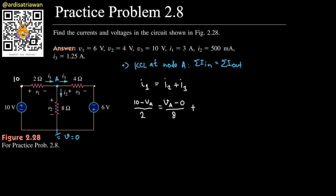And then plus i3. i3 is the difference between this node Va and this node here, which is -6 from the ground, so we'll have (Va - (-6)) divided by the resistance between them, which is 4.